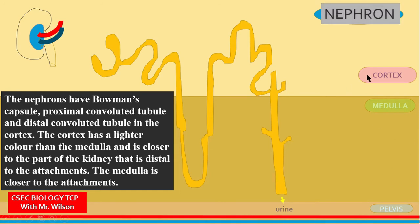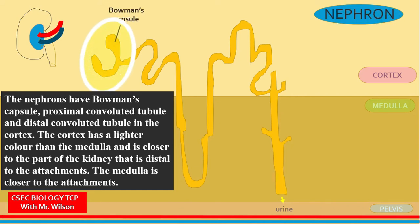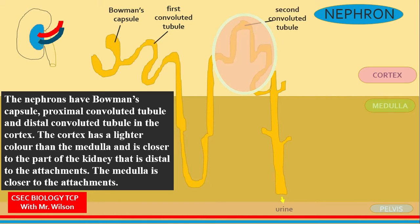The cortex is located closer to the outer portion of the kidney. Can you identify the Bowman's capsule, the proximal convoluted tubule, and the distal convoluted tubule? Let's check: Bowman's capsule, the first convoluted tubule or proximal convoluted tubule, and the second convoluted tubule or distal convoluted tubule.